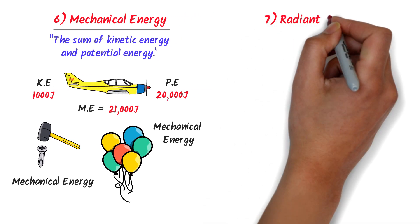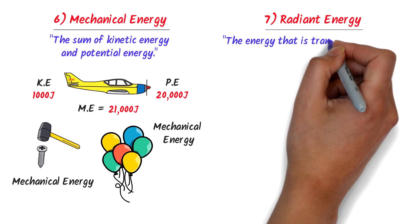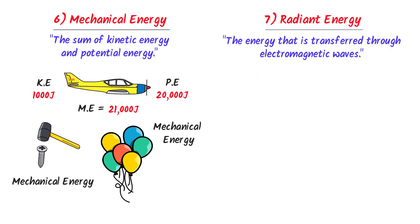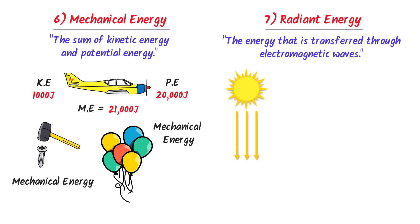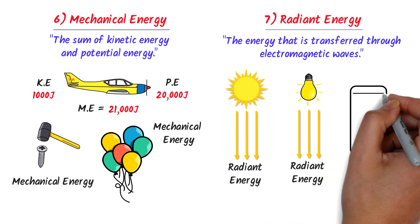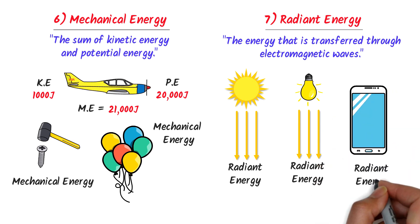The seventh form of energy is radiant energy. The energy that is transferred through electromagnetic waves is called radiant energy. For example, we receive energy from the sun in the form of sunlight, so sunlight is radiant energy. Secondly, during nighttime, we switch on a bulb — the light coming from the bulb is radiant energy. Thirdly, a cell phone uses radiant energy to transfer our voice or message over a long distance. Thus remember that the energy transferred by electromagnetic waves is called radiant energy.